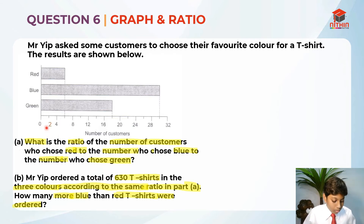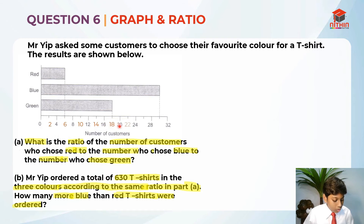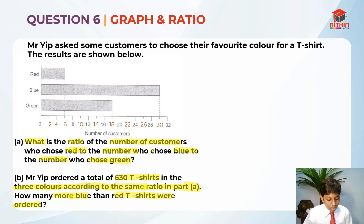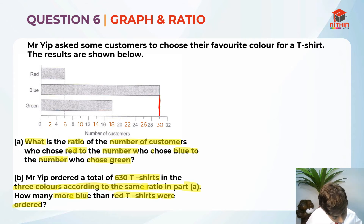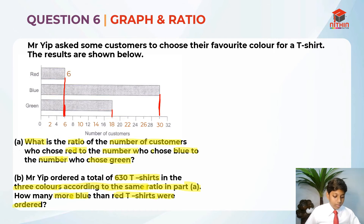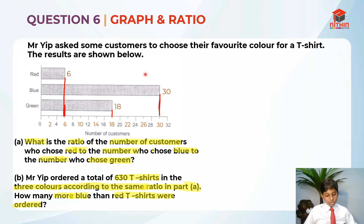So the scale goes up in multiples of 2: 2, 4, 6, 8, 10, 12, 14, 16, 18, 20, 22, 24, 26, 28, 30, 32. These are all the numbers we can now read. Looking at the bars: red is pointing down to 6, green is pointing down to 6, blue is pointing down to 30, and the remaining bar is pointing down to 18.